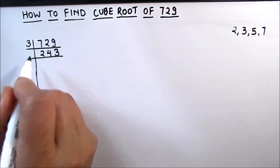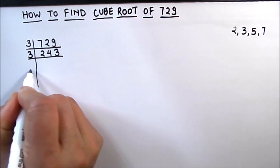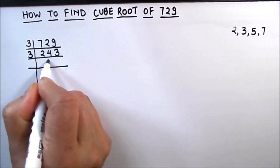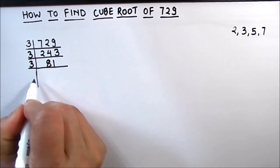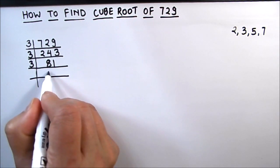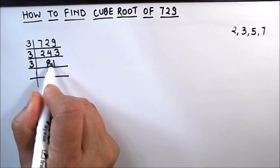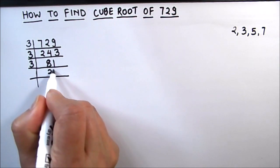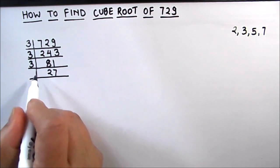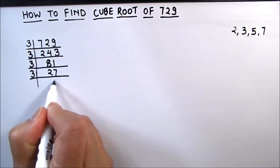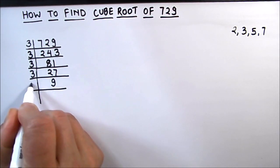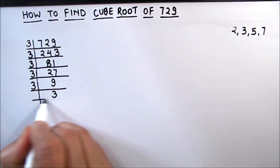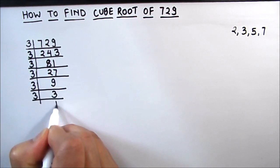Again this is an odd number so let's try 3. 3 times 8 is 24 and 3 times 1 is 3. 3 times 2 is 6, 2 is carried over to the next digit so this becomes 21, and 3 times 7 is 21. Now 3 times 9 is 27, and 3 times 3 is 9, and 3 times 1 is 3.